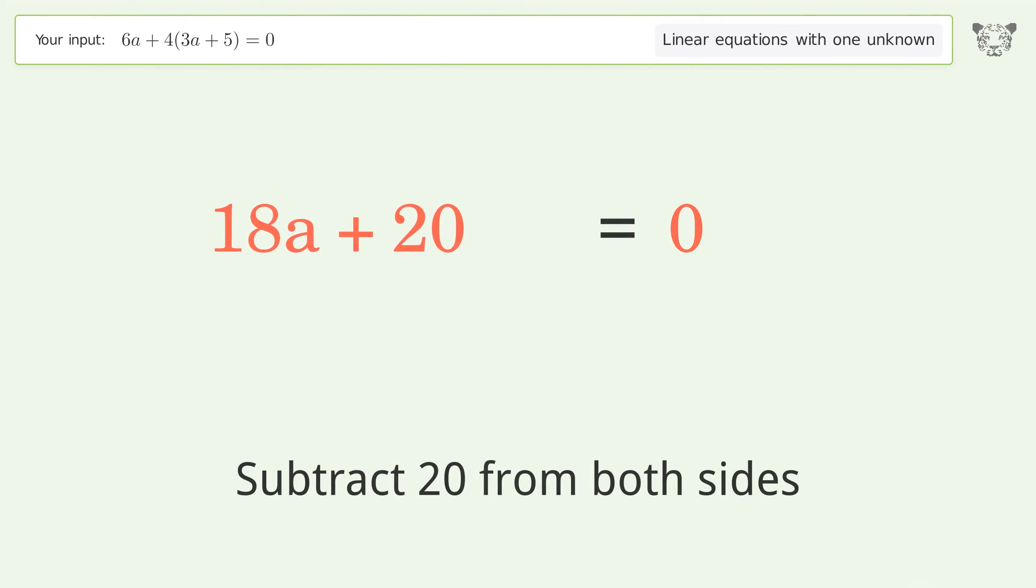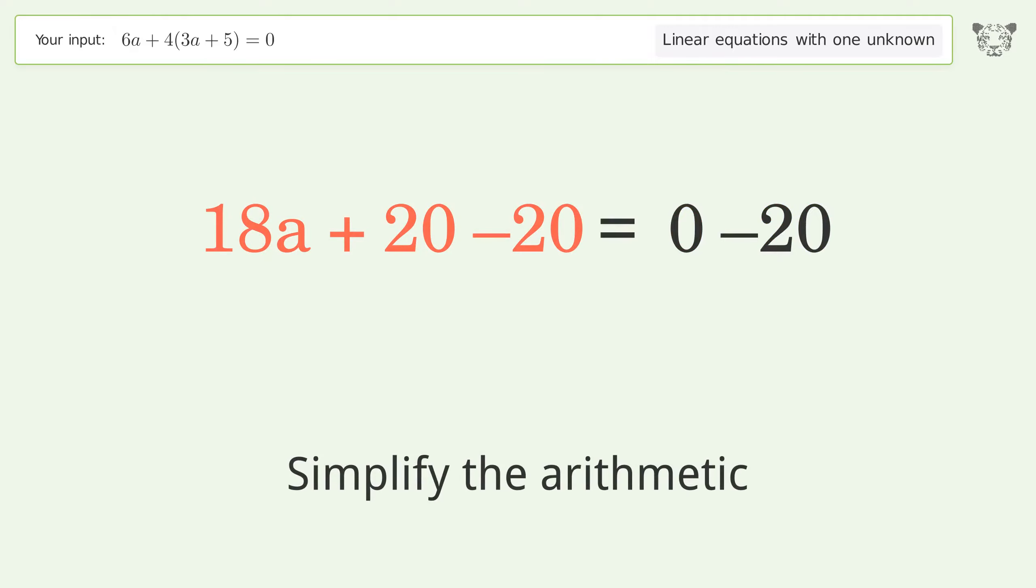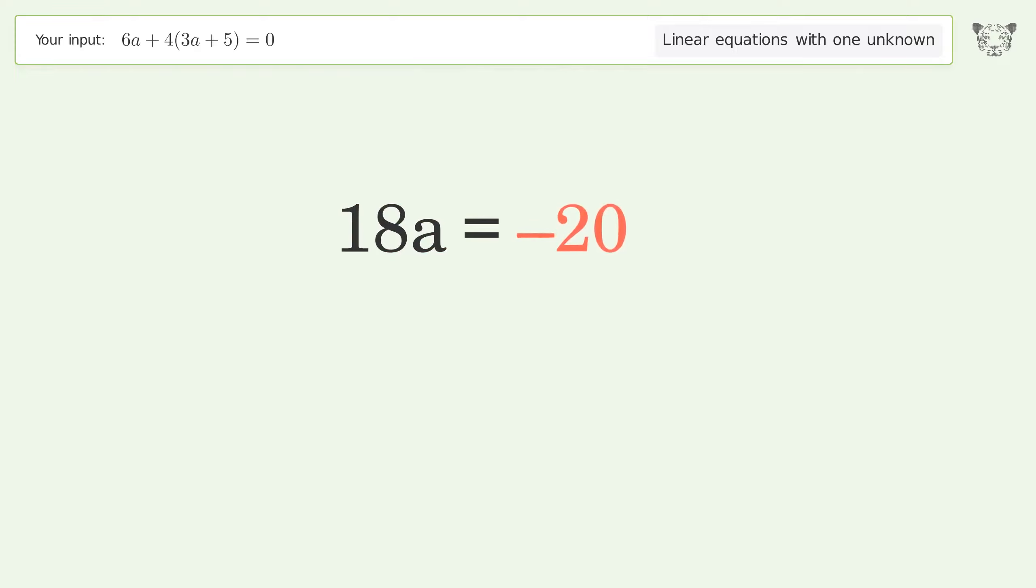Group all constants on the right side of the equation. Subtract 20 from both sides. Simplify the arithmetic.